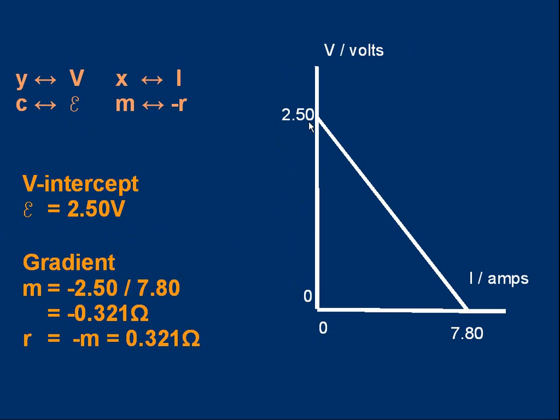Let's work out the gradient of the graph. You'll note it's negative. The voltage goes down as the current increases. So the gradient is minus 2.5 over 7.8. M is minus 2.5 over 7.8. That's minus 0.321 ohms. Notice I've put a unit for the gradient. I've divided volts by amps to work out that gradient. And in physics at least we say gradients can have units. So we've got the gradient value. But we know that m corresponds to minus r or minus r corresponds to m. So the internal resistance little r is simply minus m minus the gradient. Minus minus 0.321 is simply plus 0.321 ohms. So we've used the gradient to find our value of internal resistance little r.